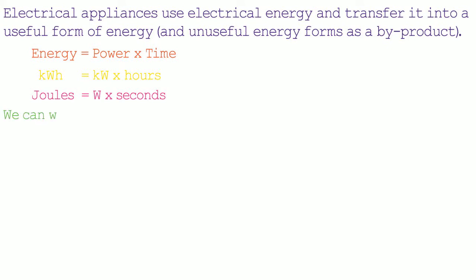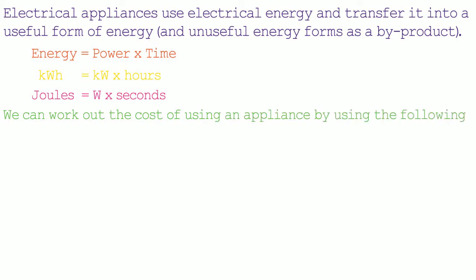We can work out the cost of using an appliance by using the following formula: cost equals the number of units times the price per unit.